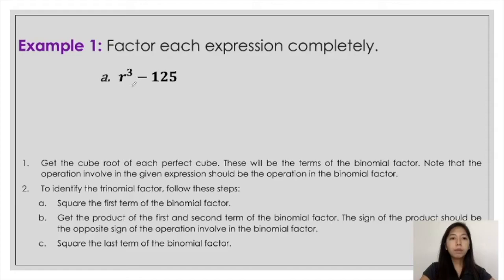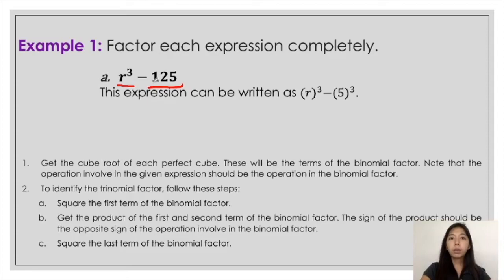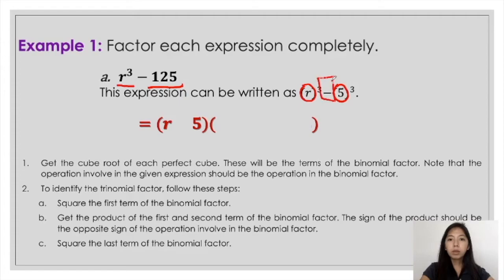Let us try the first example. Looking at the first term, r cubed — this can be rewritten as r raised to 3. And 125 can be rewritten as 5 raised to 3. So r and 5 are the cube roots already. We place them in the binomial factor and follow the operation involved. Since this involves subtraction, the binomial factor would be r minus 5.